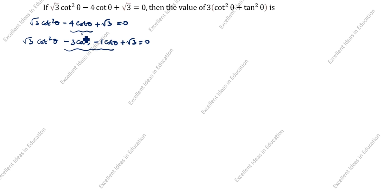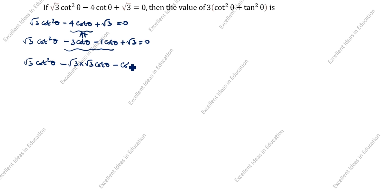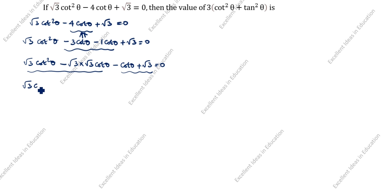You add these to get 4 cot theta. Next, root 3 cot squared theta minus 3 — how you will split root 3 — into root 3 cot theta minus cot theta minus cot theta plus root 3 is equal to 0. Now we will take this pair and this is another pair. What is common here? Root 3 cot theta. We will take root 3 cot theta outside. What is remaining? Cot theta minus root 3.